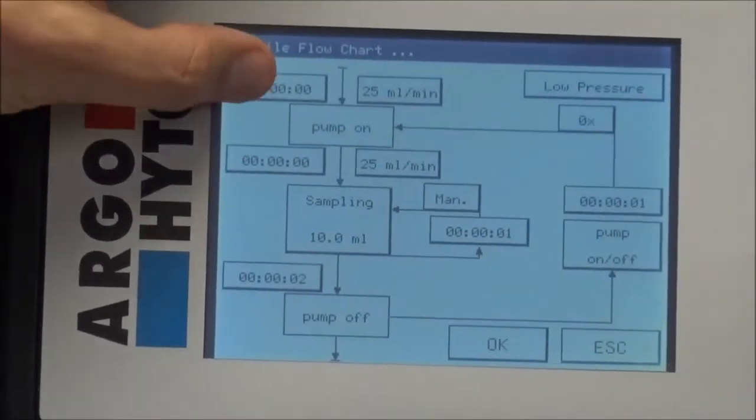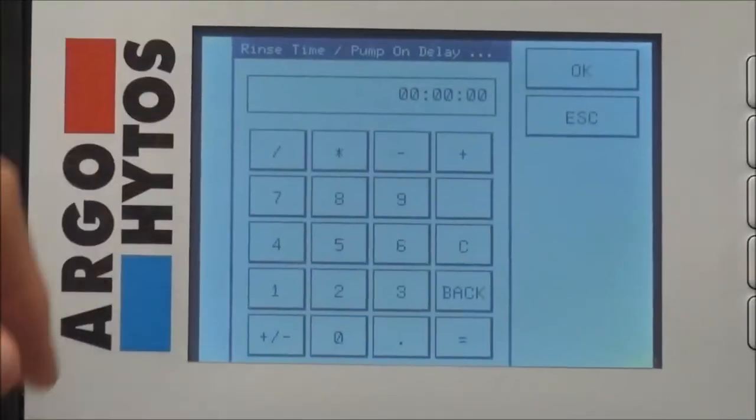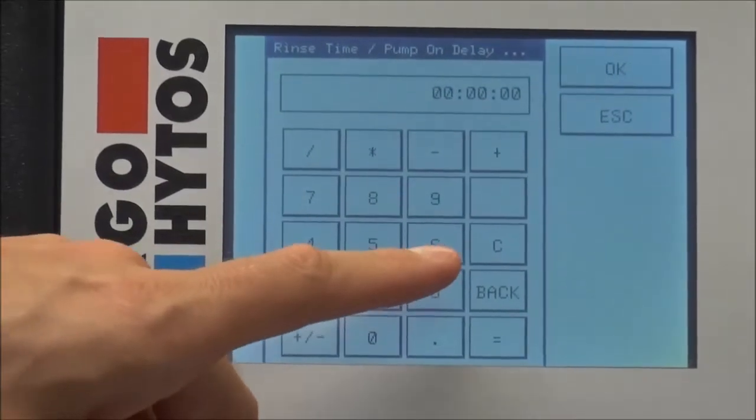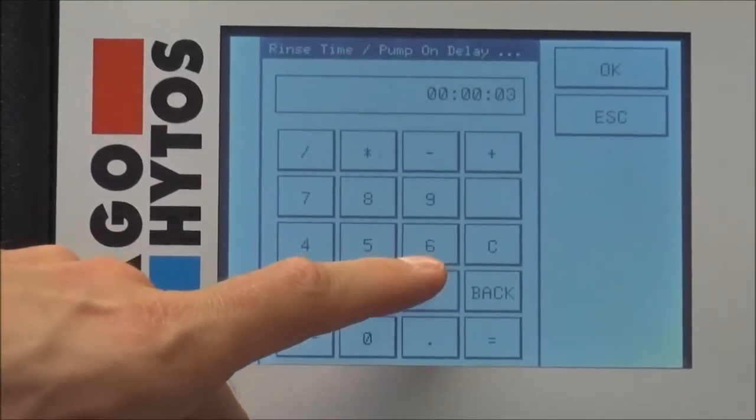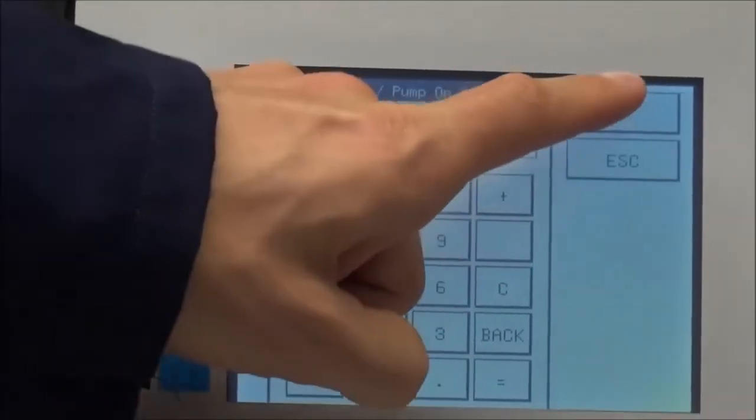First of all you see that flow through the measurement and on that flow chart the first step is the flushing time. As we want to use a bottle sample we have to start with a certain flushing time that the hoses are filled with oil. We choose 30 seconds here to be on the safe side.